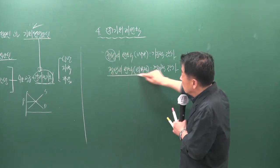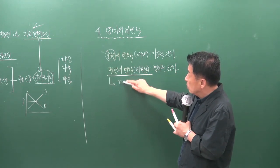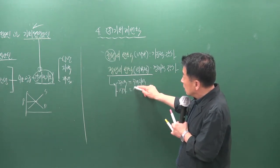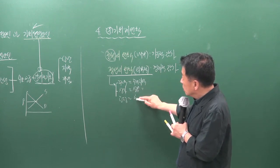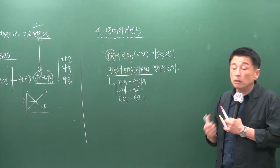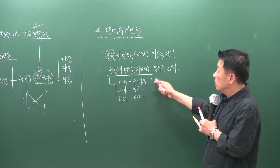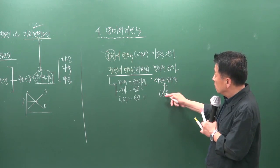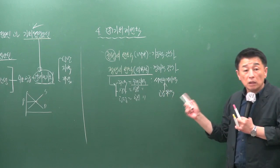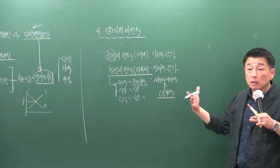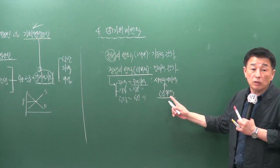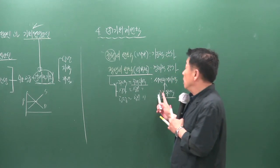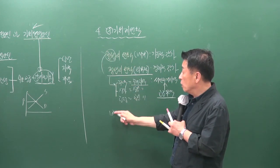적합의 원칙의 논리는 주택은 주거지역, 상가는 상업지역, 공장은 공업지역에 입지해야 적합하다는 것입니다. 같은 주거지역이라도 서민 주거지역에 고급 주택이 들어가면 주변 환경과 어울리지 않아 적정한 가치를 갖지 못하게 되며, 이때 적용하는 것이 경제적 감가입니다.